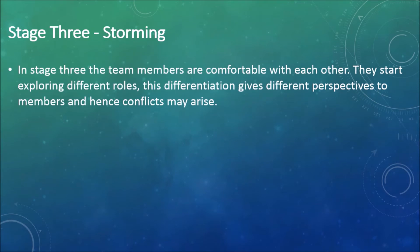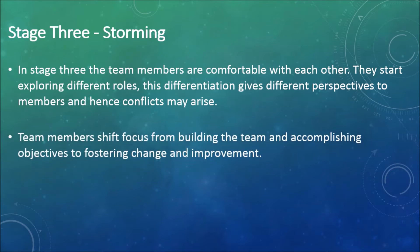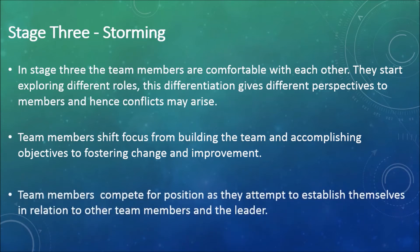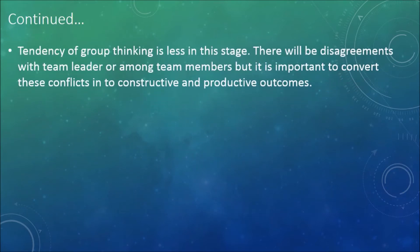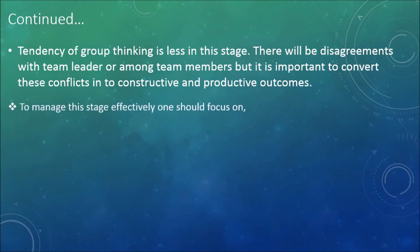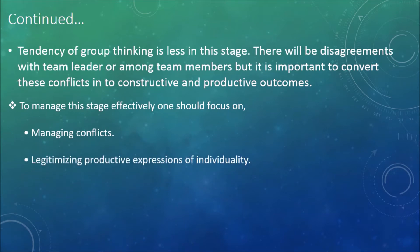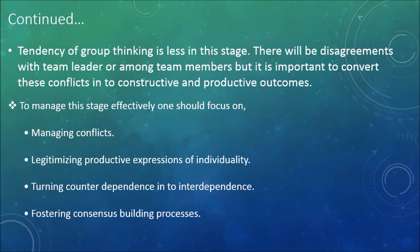Stage 3: Storming. In stage 3, team members are comfortable with each other and start exploring different roles. This differentiation gives different perspectives to members and conflicts may arise. Team members shift focus from building the team to fostering change and improvement, and compete for position in relation to other members and the leader. The tendency of groupthink is less in this stage. To manage this stage effectively, one should focus on: managing conflicts, legitimizing productive expressions of individuality, turning counter-dependence into interdependence, and fostering consensus-building processes.